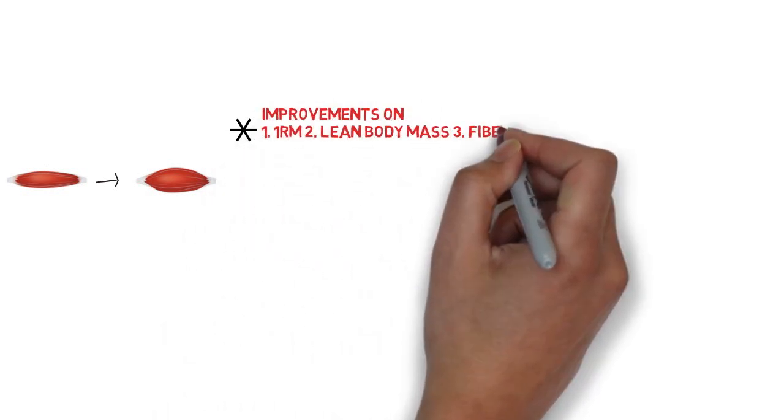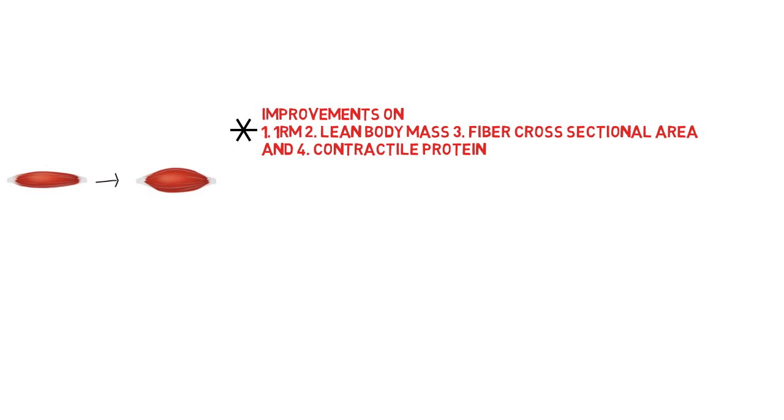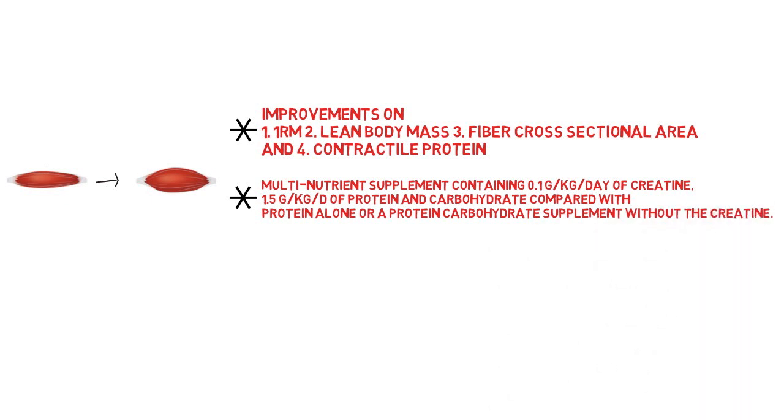Leading on to the second point, Krip et al observed greater improvements on one rep max, lean body mass and fibre cross-sectional area (i.e. size of the individual muscle cells) in trained young males when resistance training was combined with a multi-nutrient supplement containing creatine, protein and carbohydrate compared with protein alone or a protein carbohydrate supplement without the creatine.